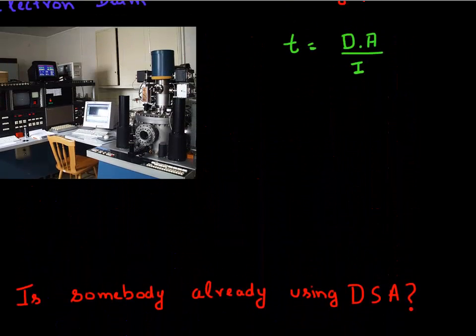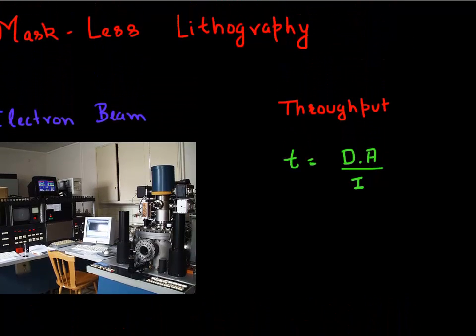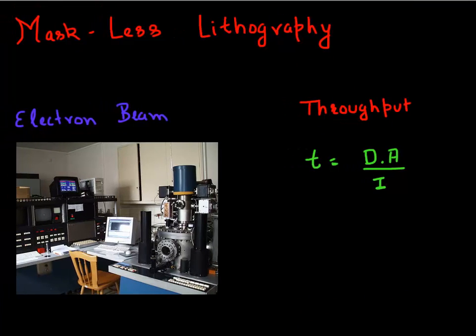So the next and the final next generation lithography technique I want to talk to you about is this mask-less lithography. And the most common or the most dominant form of mask-less lithography is using electron beams. So again, the last two techniques I discussed, that is the nano imprint and this DSA, one of the main problems was these defects. So electron beam lithography, relatively, once you get rid of the mask and you use this electron beam to write your pattern, you don't suffer from defects.